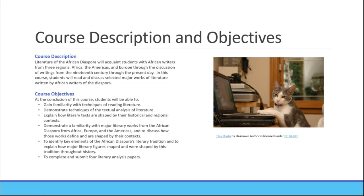I wanted to go through those a little bit. The course description: this class will acquaint students with African writers from three regions — Africa, the Americas, and Europe — through the discussion of writings from the 19th century through the present day. In this course, students will read and discuss selected major works of literature written by African writers of the diaspora.